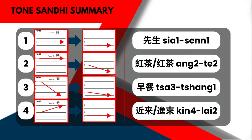安詞, meaning Black Tea — but it's literally Red Tea in Chinese languages. By itself, the first word is 安. In this context, the first word changes and it becomes 安定.